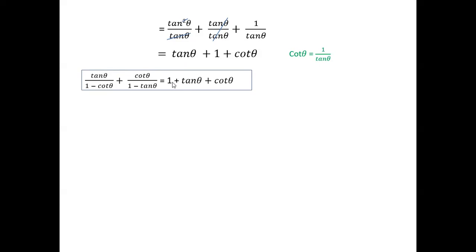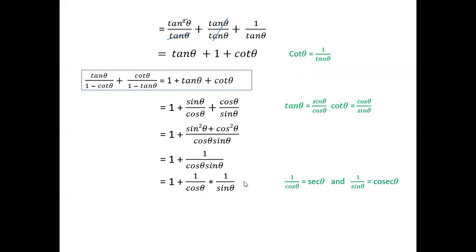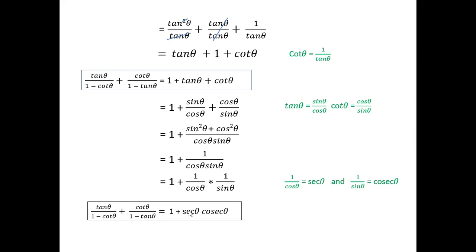For the second part, we take the result 1 plus tan θ plus cot θ and substitute tan θ = sin θ upon cos θ and cot θ = cos θ upon sin θ. Taking LCM as sin θ cos θ, it becomes 1 plus (sin squared θ plus cos squared θ) upon (cos θ sin θ). Since sin squared θ plus cos squared θ equals 1, this simplifies to 1 plus 1 upon (cos θ sin θ), which equals 1 plus sec θ cosec θ.